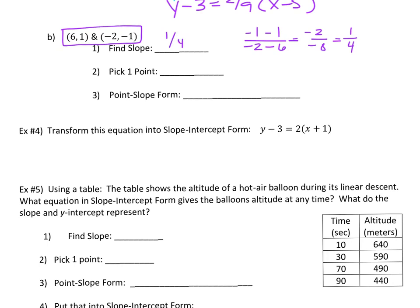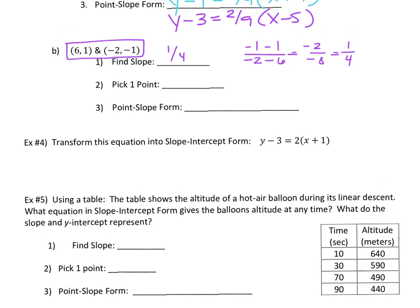Your slope is one-fourth. If you pick the point (−2, −1), the equation is y + 1 = (1/4)(x + 2), since both coordinates are negative and the signs flip. If you pick the point (6, 1) instead, it's y − 1 = (1/4)(x − 6). Both answers are correct.